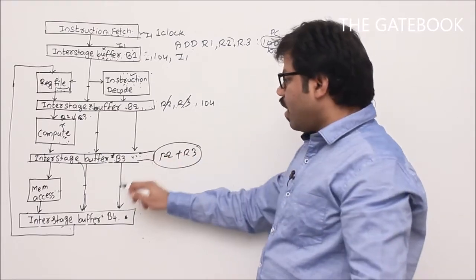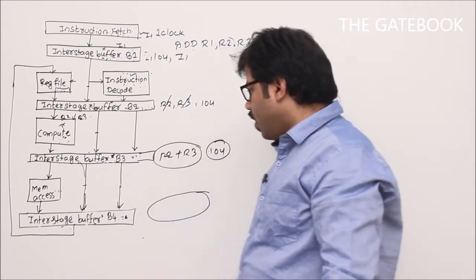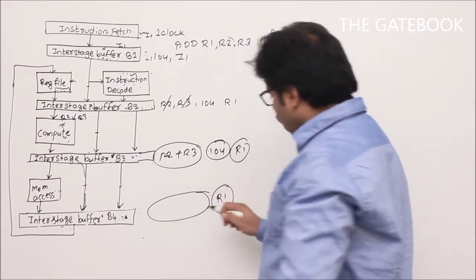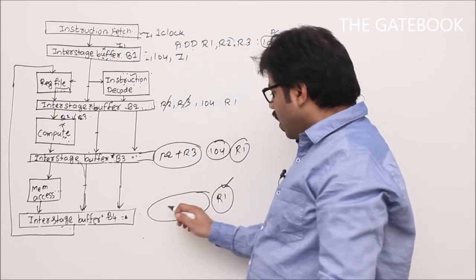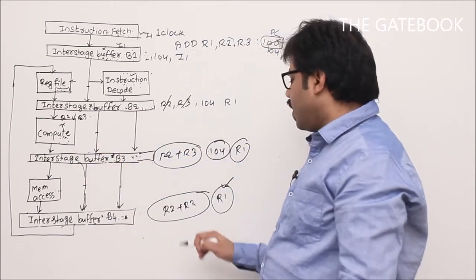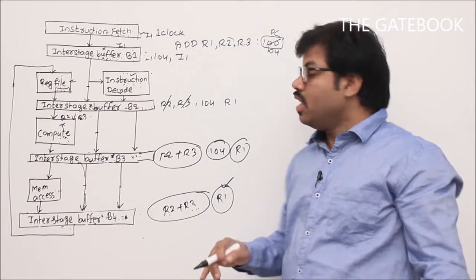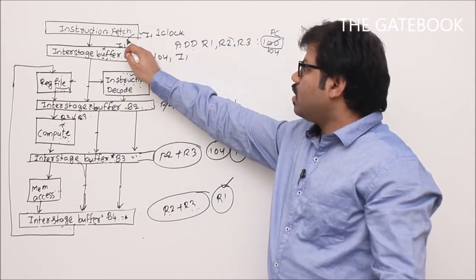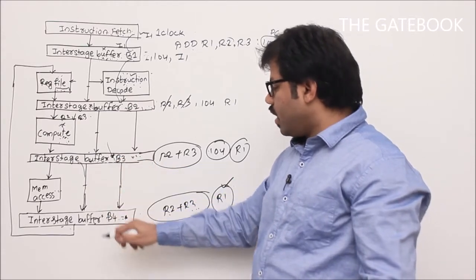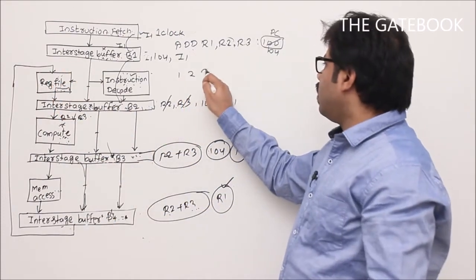R2 and R3 are not forwarded directly to the next buffer; instead R2+R3 (the result) is forwarded. Since this is ADD R1, R2, R3, there is no memory access required. R1's address is also forwarded throughout the pipeline. So buffer B4 contains the address of R1 and the value R2+R3. In the next clock cycle, R2+R3 is moved to register R1 in the register file. One instruction takes five clock cycles in sequential mode.